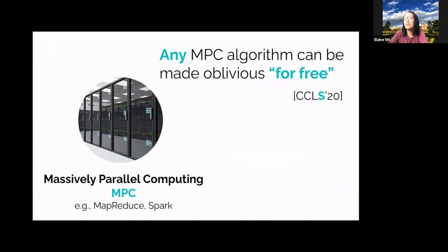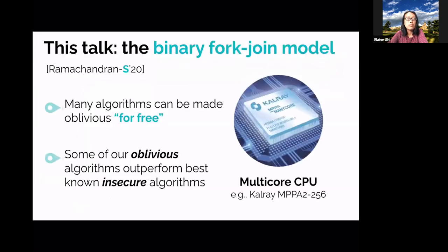In this talk I focus on the binary fork-join model — joint work with Vijaya Ramachandran. In this model we show that many algorithms can be made oblivious for free, and for several computational tasks we obtain oblivious algorithms that asymptotically outperform the best known insecure algorithms. We also showed that any massively parallel computation algorithm can be made oblivious with no asymptotic overhead, a result that appeared at ITCS earlier this year.